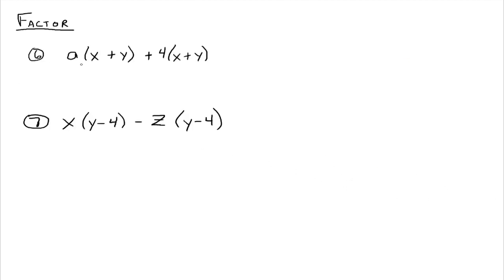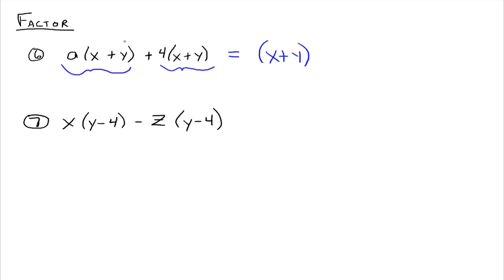Now we have a times x plus y, plus 4 times x plus y. We're going to look at this as two terms: a times x plus y, and 4 times x plus y, separated by this plus. Looking at these two things as two separate terms, we ask what do they have in common? We can see they have x plus y in common. So we factor x plus y out: taking x plus y out of the first part leaves a, and taking x plus y out of the second part leaves 4. So this factors as x plus y times a plus 4.